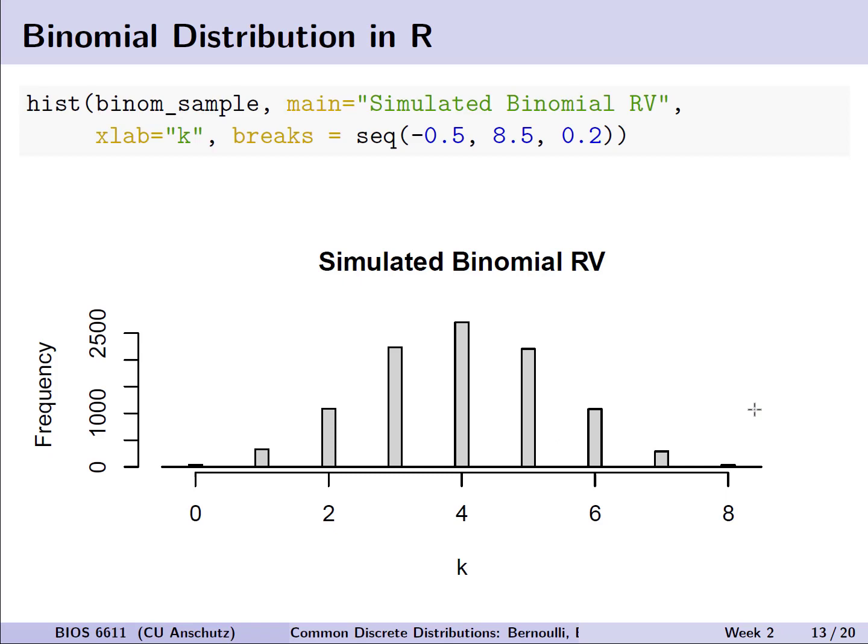From these generated 10,000 samples of possible up to eight successes, we can make a histogram to show that probability of observing the number of values. What we see here is that we have our values for 0, 1, 2, 3, 4, 5, 6, 7, or 8 successes. What we can see is that if we have four successes, that's actually the largest or most observed frequency out of our 10,000 trials.